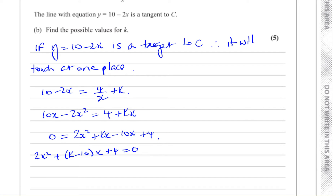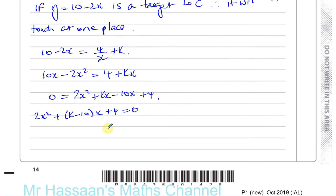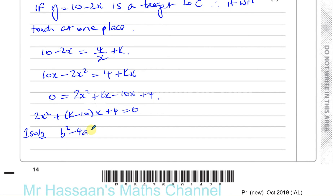This equation has one solution because they've told us that 10 minus 2x is a tangent to the curve. If it's a tangent to the curve, there will be one place where it touches — it won't cut through and it won't miss the curve. So if there's one solution, then the discriminant b² minus 4ac has to equal 0. In this equation, a is 2, b is k minus 10, and c is 4.